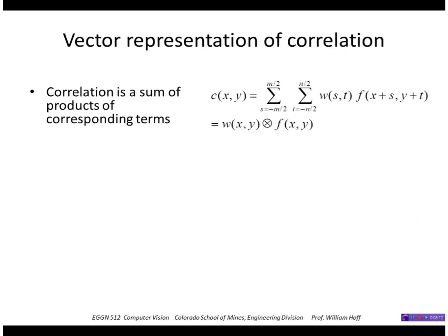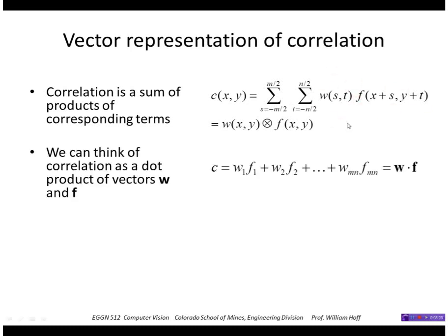Another way to look at this is to think of cross-correlation as a vector product. So here is cross-correlation, sum of products. Well, all it is, it's the value of w times the value of f, corresponding values, product of those values.